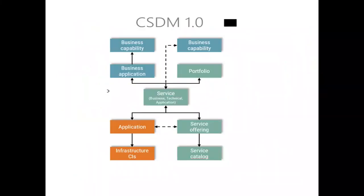This was the conceptual model in the beginning when the Kingston release was launched. ServiceNow has a concept of services. On the top they have portfolio, business application capabilities — they are interrelated. At the bottom they have an application, infra offerings and catalog. Simple, no domains, nothing much here.